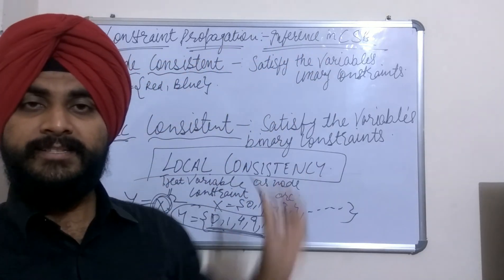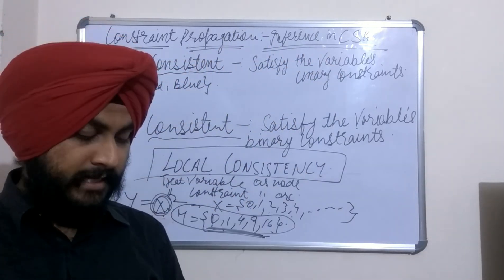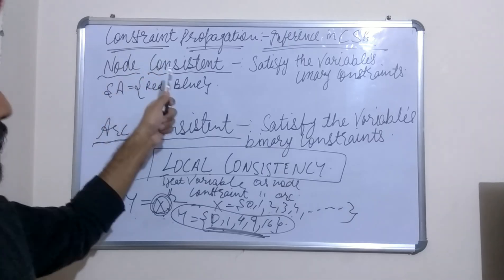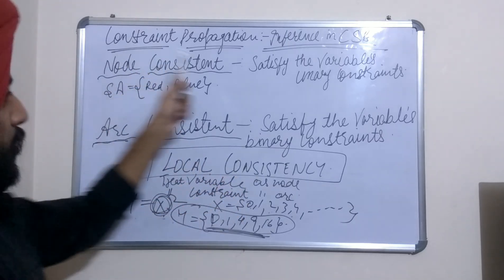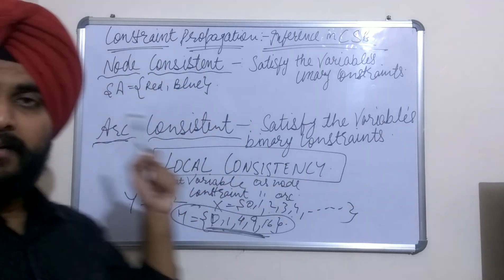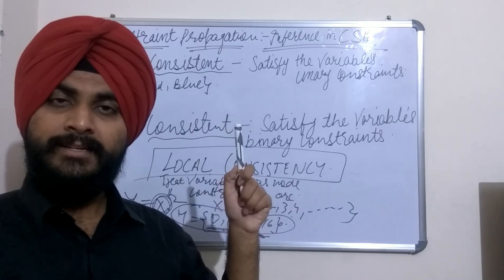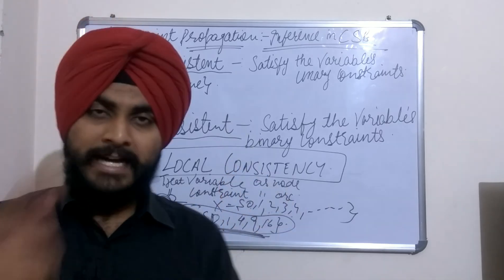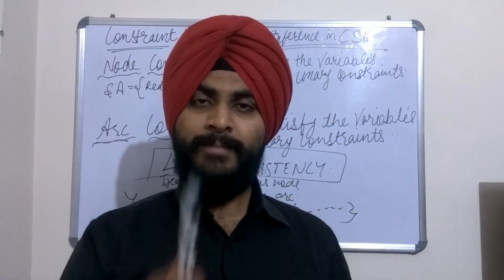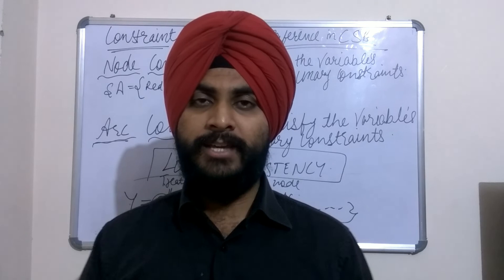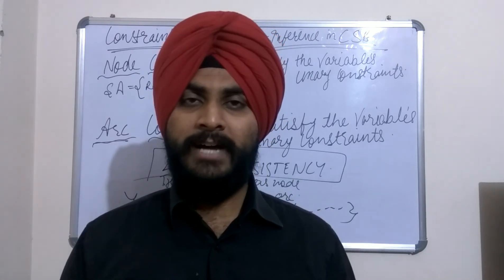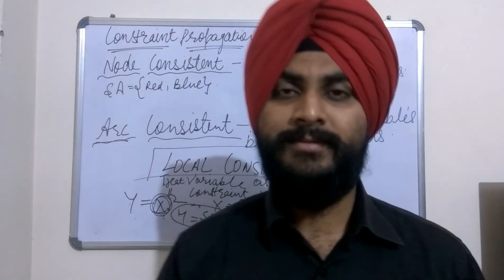Toh yahi hain constraint propagation ya inference in CSPs ke 3 tarike: local consistency, node consistency, aur arc consistency. That's all for this video. Thank you for watching — please subscribe to my YouTube channel and share my video as much as you can. Thank you.